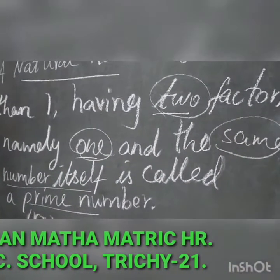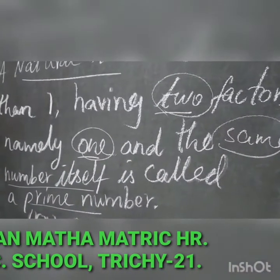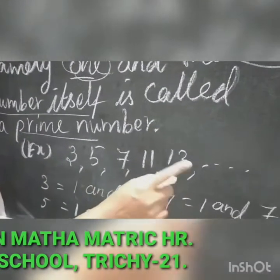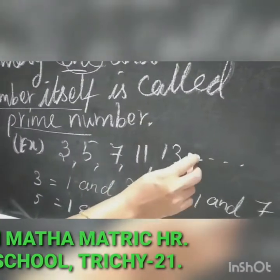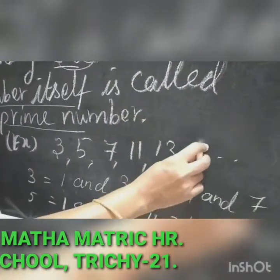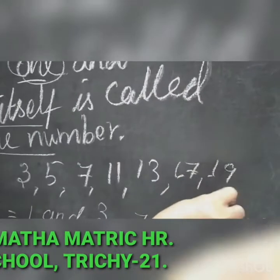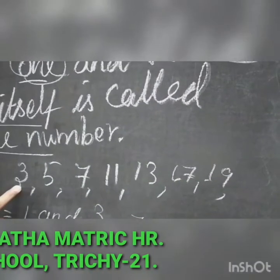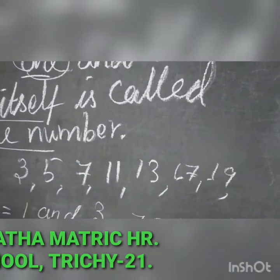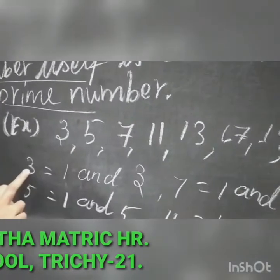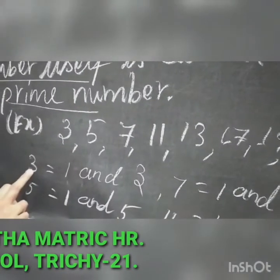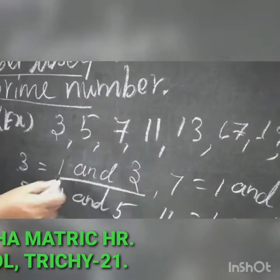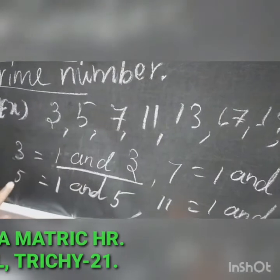Let us see the examples: 3, 5, 7, 11, 13, 17, 19, and so on. For example, the factors of 3 are 1 and 3 only — no other factors.